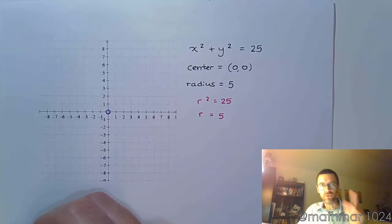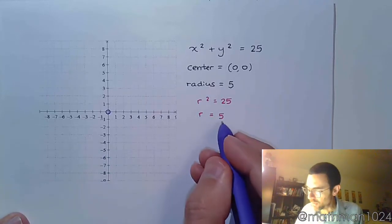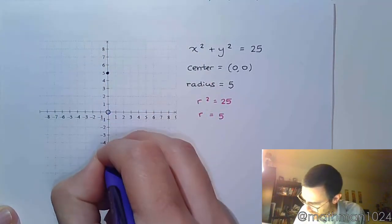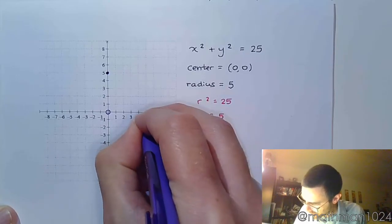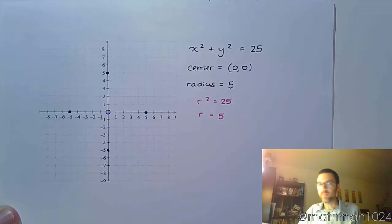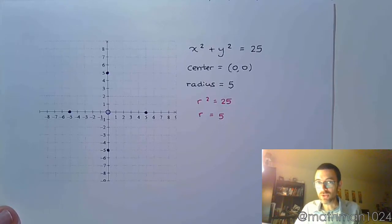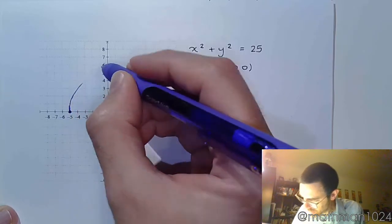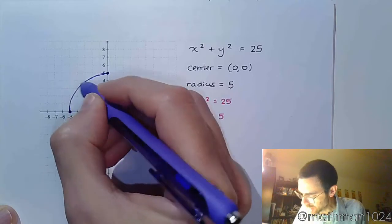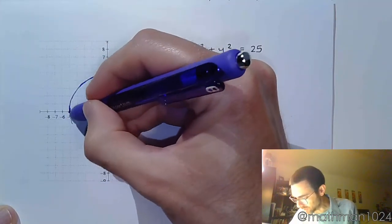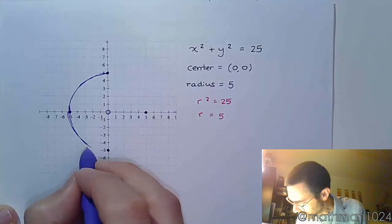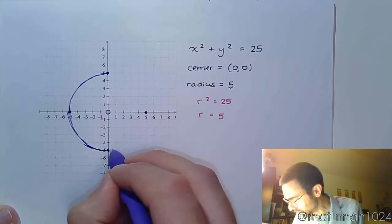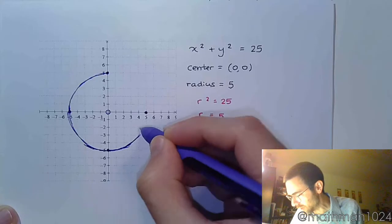To graph a circle, use the radius and go up, down, left, and right that many units. My radius is 5, so I'm going to go up 5, down 5, left 5, and right 5 units. From here, you draw a circle — please make sure you draw a circle and not a diamond. My circles are not the best ever, but hopefully they look more like circles than a diamond.